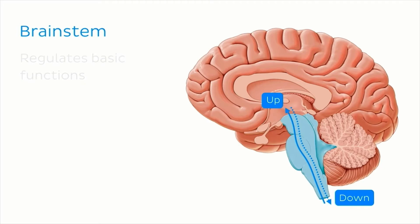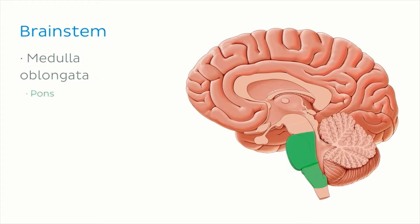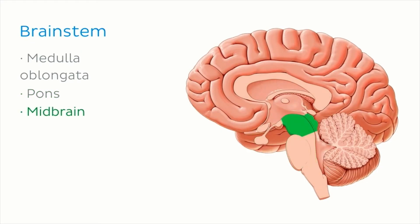The brainstem is made up of three separate parts: the medulla oblongata, most inferiorly; the pons, which is the middle part of the brainstem that appears to be bulging out; and finally the midbrain, situated at the most superior aspect of the brainstem.